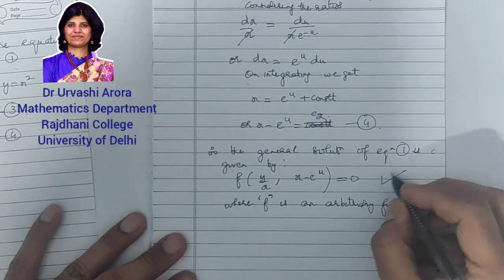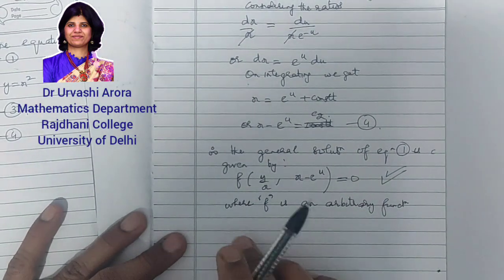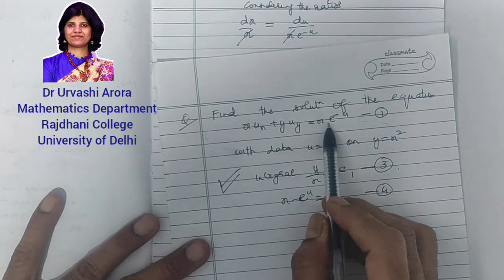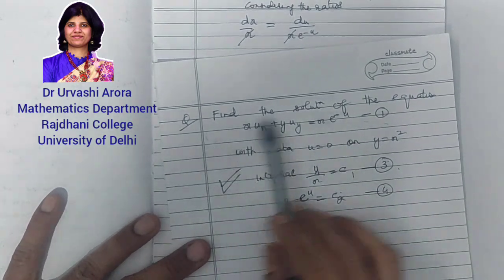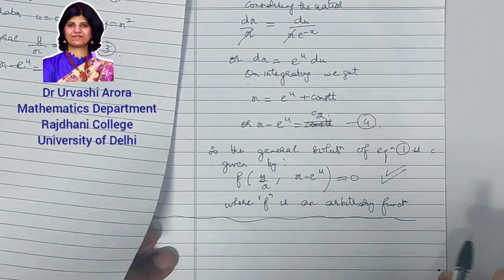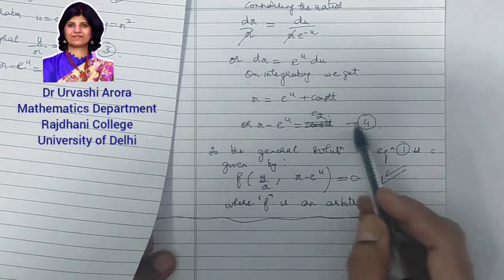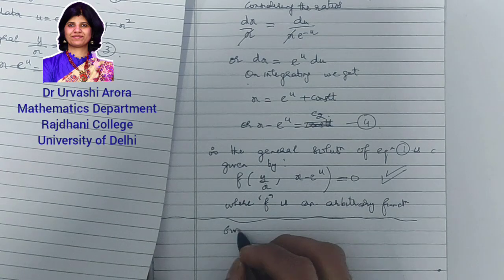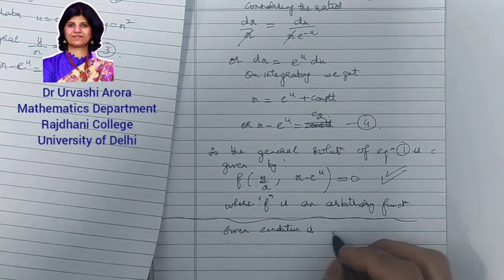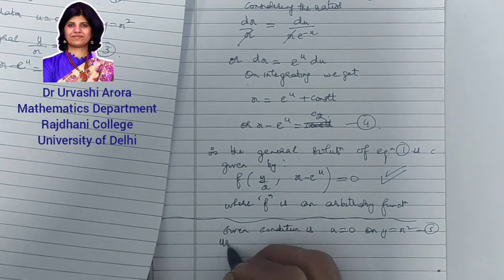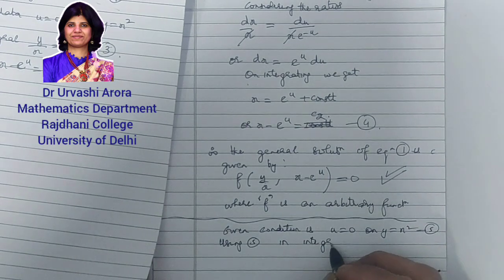This was the general solution, but we are looking for the Cauchy solution — that solution of PDE 1 which also satisfies the initial condition. The given initial condition, marked as 5, is: u = 0 when y = x². Using condition 5 in integrals 3 and 4: for integral 3 (y/x = c₁), replace y with x² and we get x²/x = c₁, giving x = c₁.